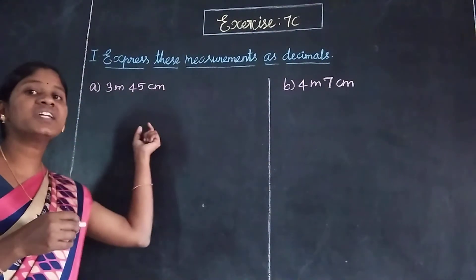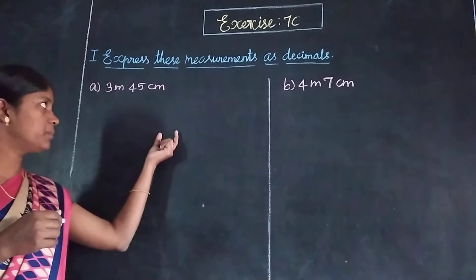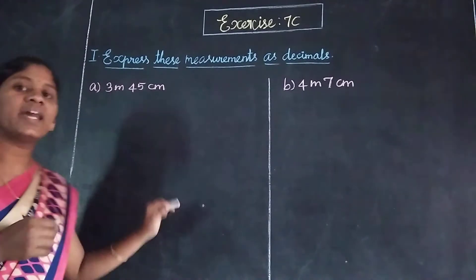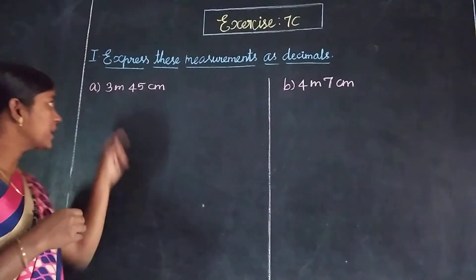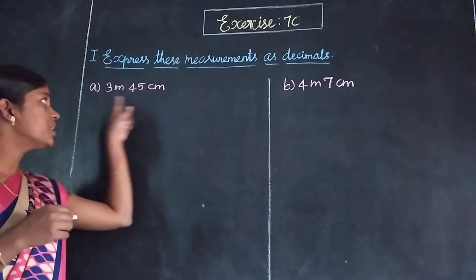The same way to express these measurements as decimals. For the first problem: 3 meters 45 centimeters. We need to write this in decimal form. The bigger unit is in the answer.